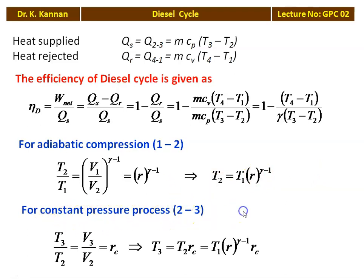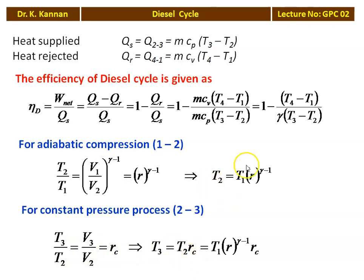For the constant pressure process 2 to 3: T3/T2 = V3/V2. V3/V2 is defined as R_C, the cutoff ratio — V3 is the volume after heat addition and V2 is the volume before heat addition. So T3 = T2 · R_C. Substituting T2 = T1 · R^(gamma−1), we get T3 = T1 · R^(gamma−1) · R_C.